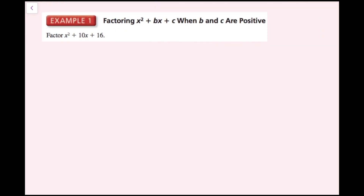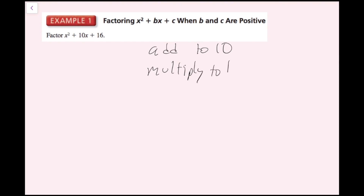In this example, we're going to factor x squared plus 10x plus 16. The b value needs to equal the sum of my two numbers, and the c value needs to equal the product of my two numbers. So I need to find two numbers that add to 10 and multiply to 16.